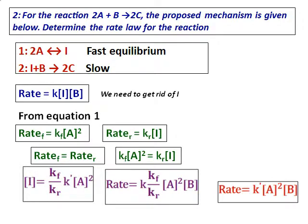Substituting into the rate equation gives: rate = K·(Kf/Kr)·[A]²[B]. Since K, Kf, and Kr are all constants, they can be combined into a single constant K′. Therefore, the rate equation becomes: rate = K′[A]²[B]. It is second order with respect to A and first order with respect to B. We use the principle that the rate of the forward reaction equals the rate of the reverse reaction to solve for the intermediate.